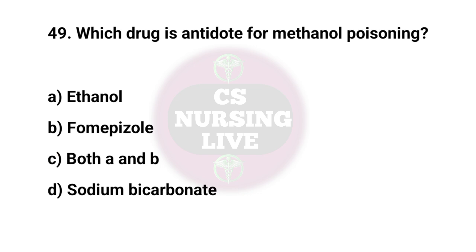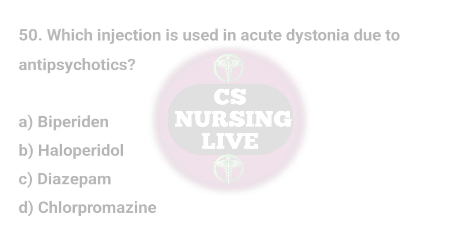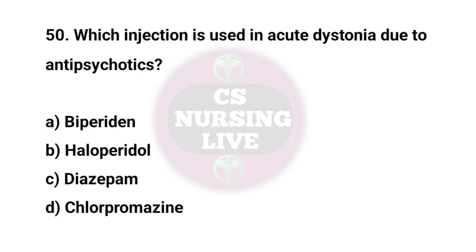Question No. 50. Which injection is used in acute dystonia due to antipsychotics? Right answer is A. Benztropine.